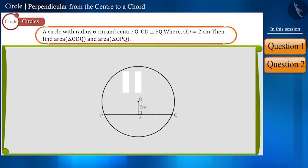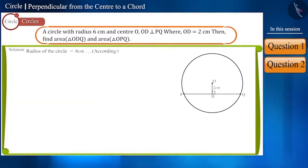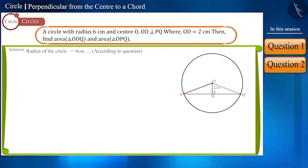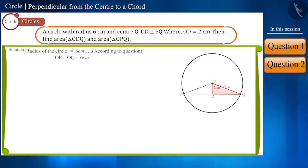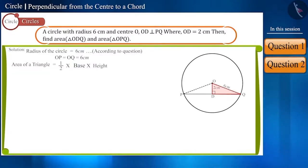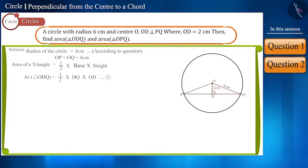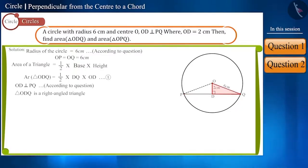You can pause the video and try it yourself. The radius of the circle is given to be 6 cm. By joining any line segment from the center of the circle to any point on the circle, we get the radius. So, OP and OQ are the radii, and their length will be 6 cm. The formula for the area of a triangle is half multiplied by base multiplied by height. Since line segment OD is perpendicular to chord PQ, triangle ODQ will be a right angle triangle.